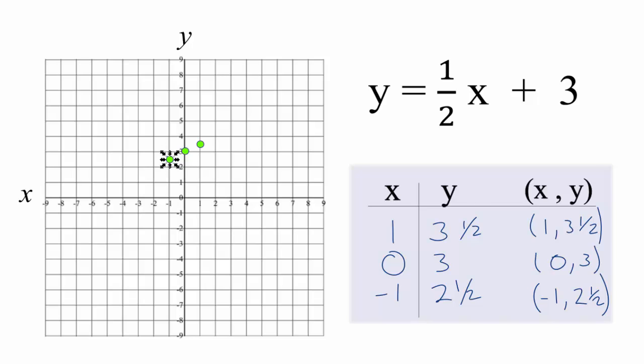And there's our line. We could have done it with just two points, but it's nice to have three in case you make an error. Let's put a line through this. Then we'll put arrows out here to show that this goes to infinity.